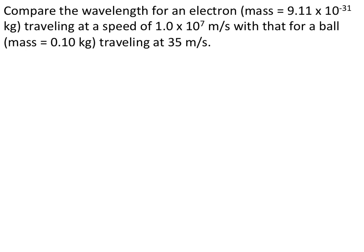They want us to compare the wavelength for an electron with a specific mass traveling at a specific speed with that for a ball with this mass traveling at this speed. This is two calculations of wavelength, one for an object with relatively small mass and one with a relatively larger mass.